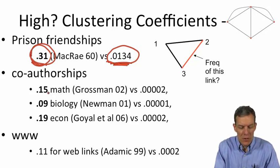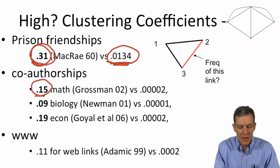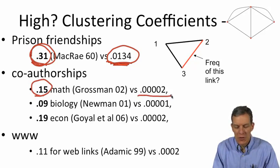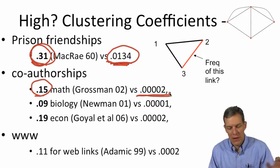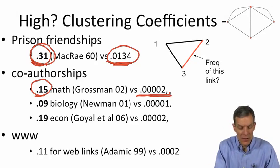So that tells us that the network looks dramatically different than what would have happened if we'd put these links down uniformly at random. Co-authorships, 15% in math co-authorships. Here you see that the P is extremely tiny.